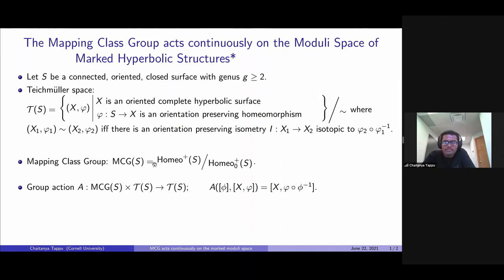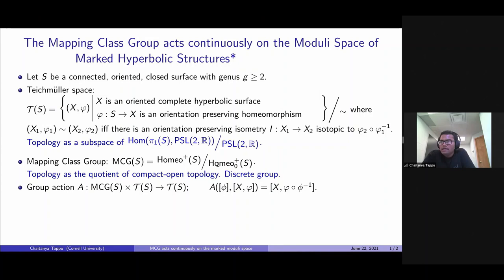One difference is that I like to call the mapping class group MCG rather than ModG. I want to add that T(S) is topologized by realizing it as a subspace of this character variety. MCG has a natural quotient of compact open topology, but it turns out that this is a discrete group. It's a discrete space.